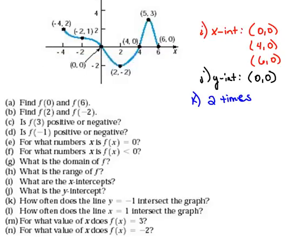Okay, now the opposite of that would be part l. It says, how often does the line x equals 1 intersect the graph? Well, we have to know what x equals 1 looks like, and that would be a vertical line that crosses through the x-axis at 1. So if we were to draw in x equals 1, we can see that it's going to hit our graph in one place. So the line x equals 1 intersects the graph one time.